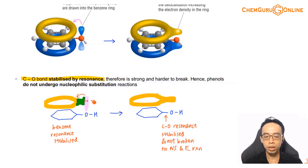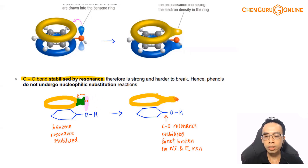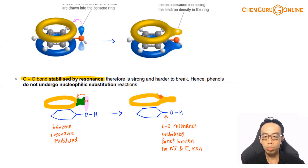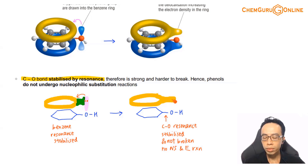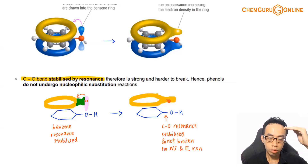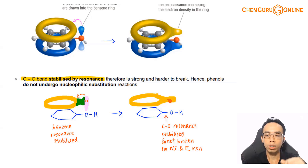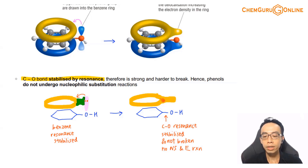Oxygen uses its lone pair to interact with benzene, so the delocalization is extended to the CO bond. The delocalized pi system can move around the six carbons, go out to the CO group, and come back in. You can see that the CO bond overhead is also sheltered and protected by this delocalized pi system, so the CO bond is also stabilized by resonance.